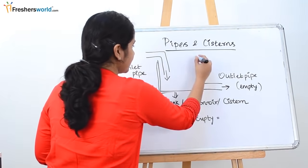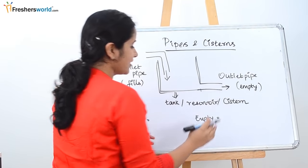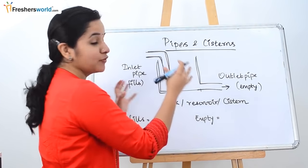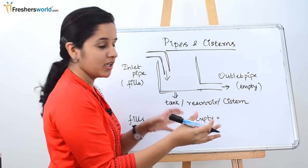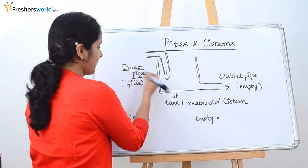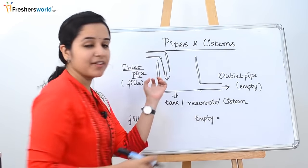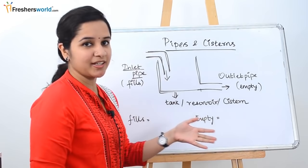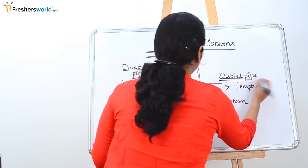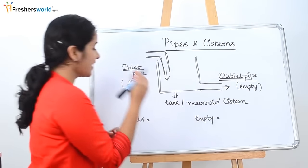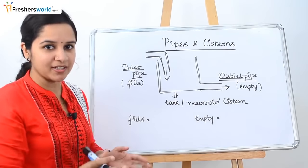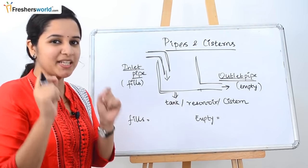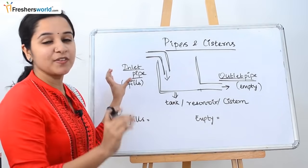Let's take this as a tank. The pipe that is coming into it, filling the water, is the inlet pipe. The pipe that is taking away the water from the tank, or emptying it, is the outlet pipe. So the inlet pipe fills the tank and the outlet pipe empties the tank.